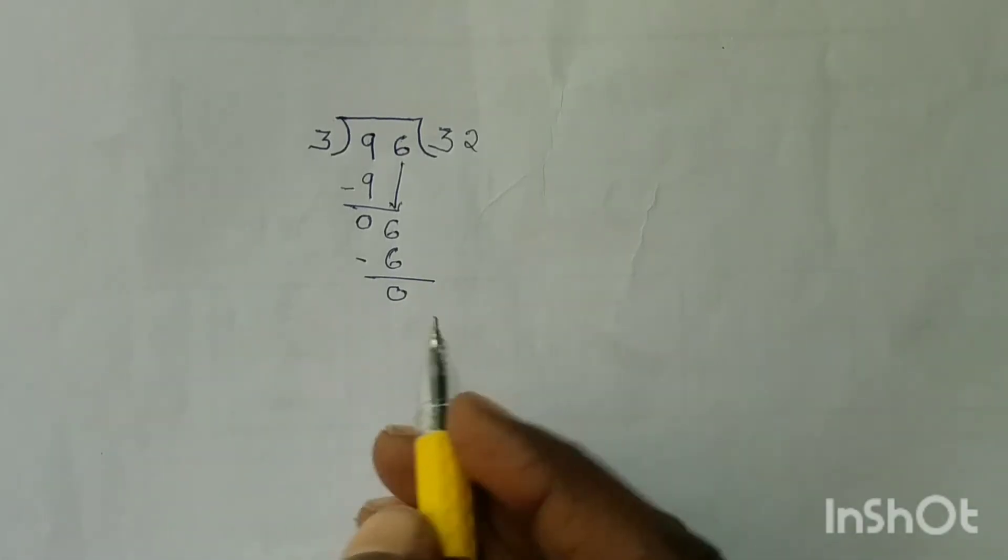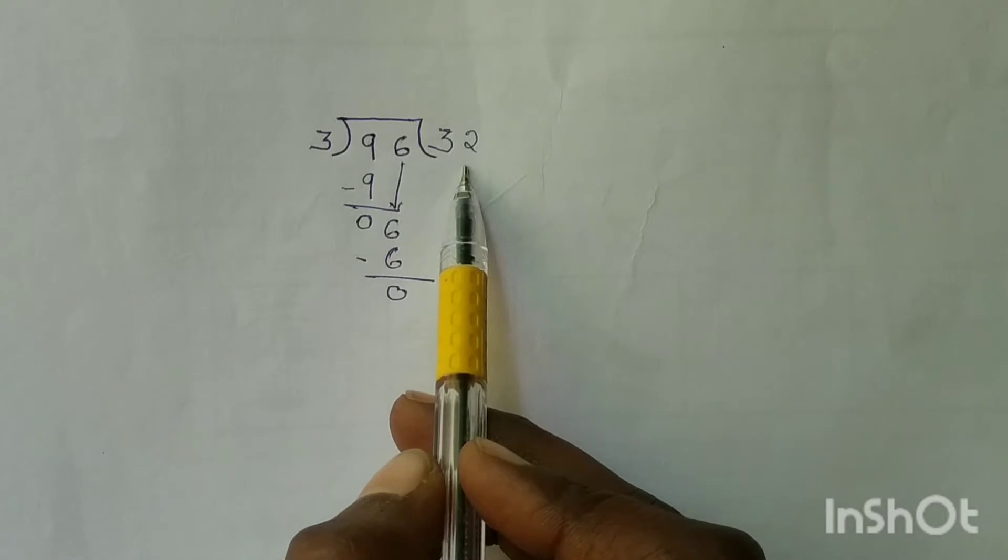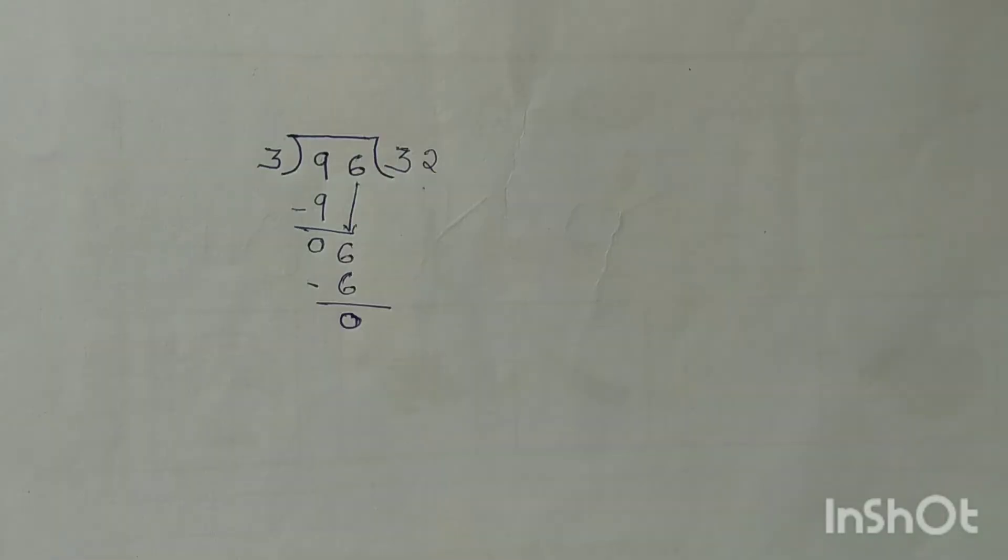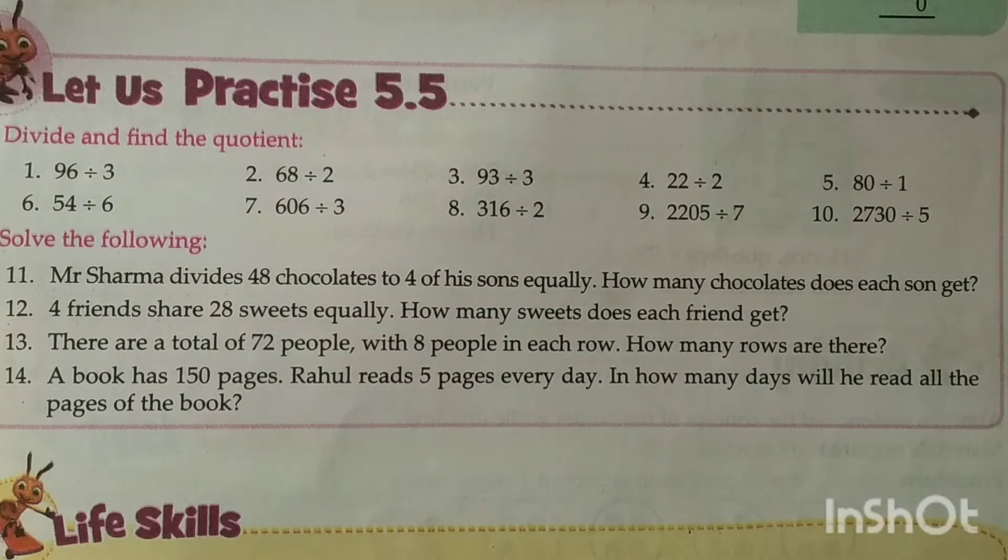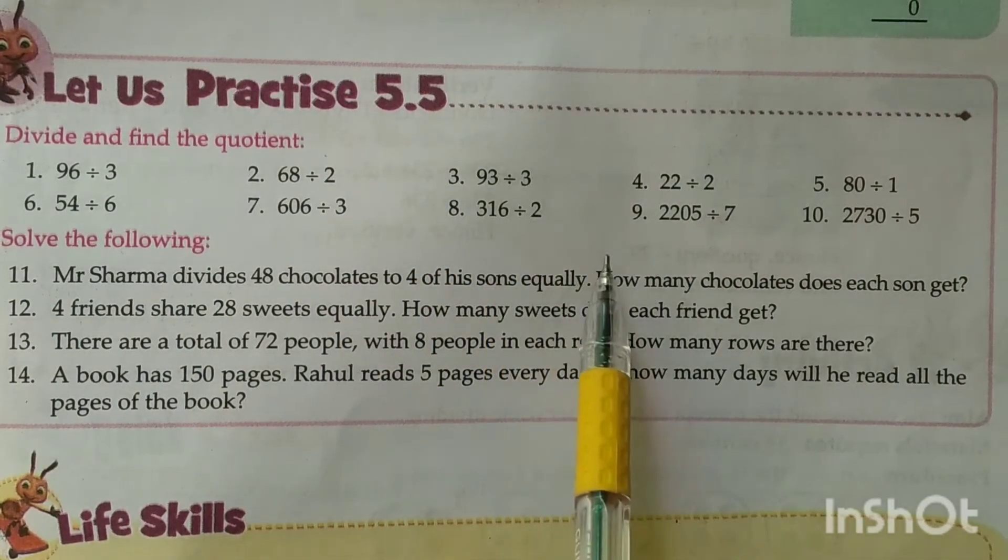6 minus 6 is equal to 0. The quotient is 32. Now children, you will solve the remaining questions yourself.